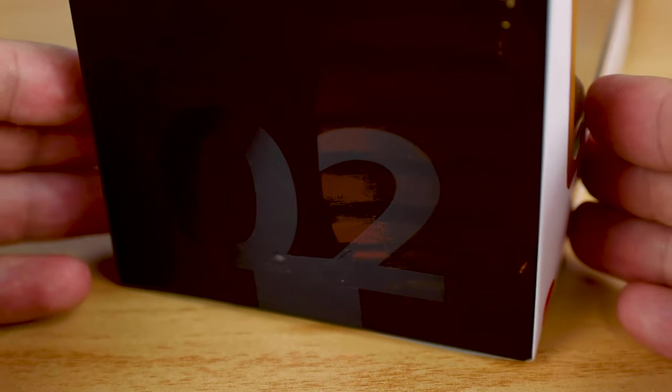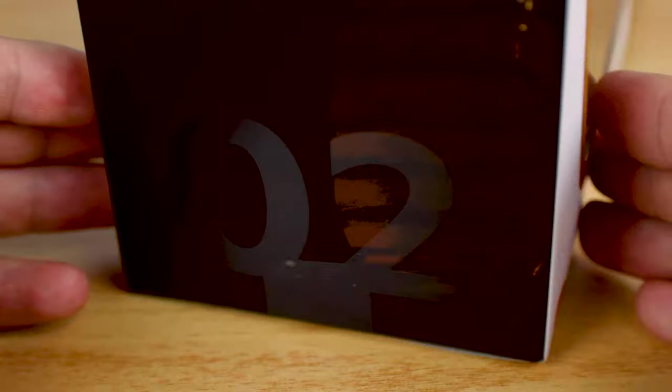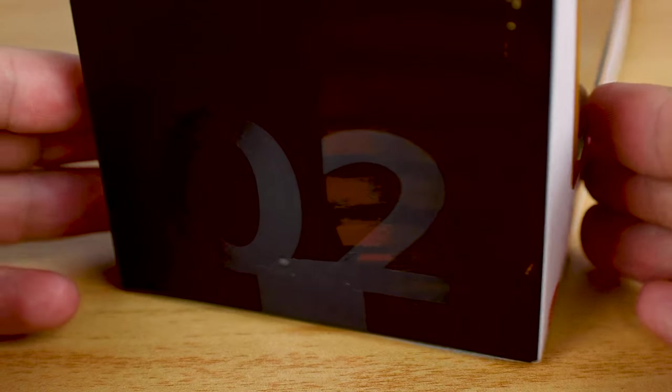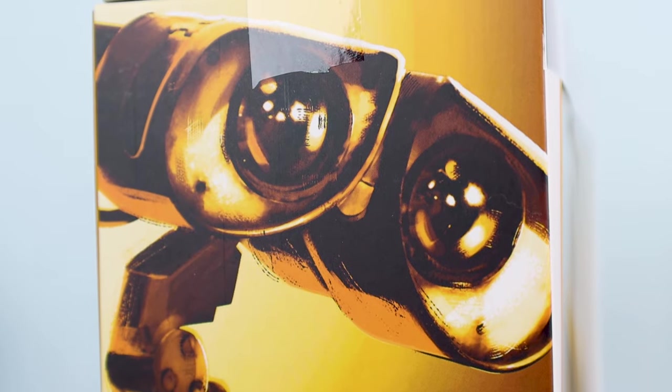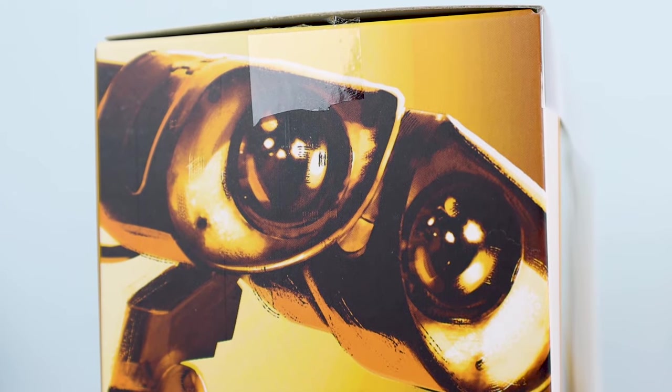WALL-E is number 02 in Mattel's Spotlight Series, and I'm so glad this box continues that classy varnish numbering system that started with Kevin, but had me worried when Woody's packaging didn't get it. And staying consistent with the other two releases so far, WALL-E also gets this amazing art treatment on the left side of the box here, this time in a bold yellow color.